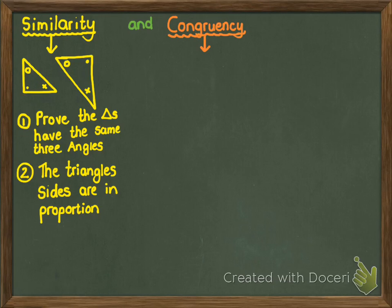Congruency means that your triangles or other shapes are absolutely identical — so exactly the same sides and exactly the same angles.